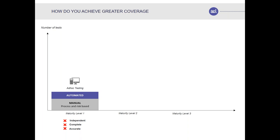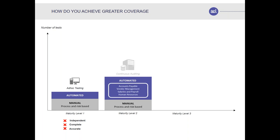In the modern world, most of an organization's data is in the ERP system, capturing almost every transaction. This leads us to maturity level two: continuous auditing. Continuous auditing supposes there's still some manual testing needed, but much of the organization can be continuously audited. The audit team has a server connected to the data, continually extracting it and achieving greater coverage without additional human resource cost, and the data is independent because audit extracts it directly from the ERP systems.